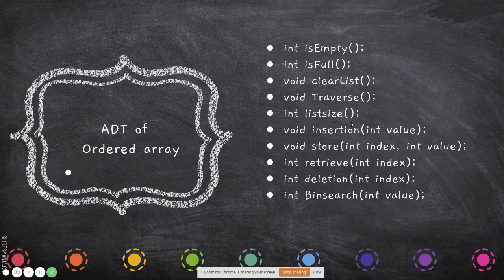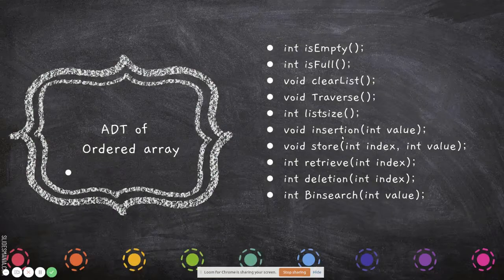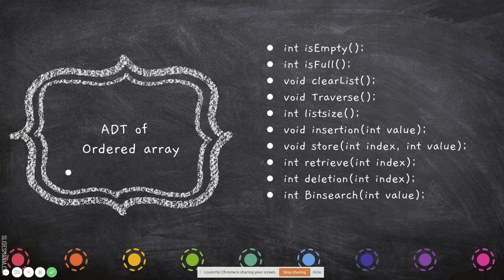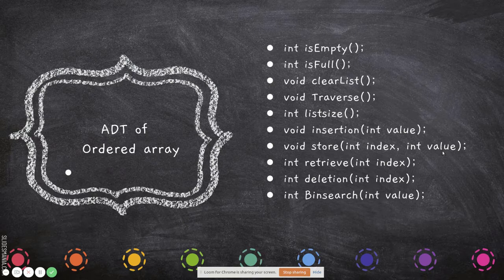'listSize' returns the number of elements currently in the array. 'insert' is used to insert a particular value. Notice that this insertion is different from what we saw in the unordered array — there you provided both an index and a value, but here you provide only the value, and the value automatically finds its correct position to be inserted in sorted order. 'store' replaces an existing element at a given index. 'retrieve' lets you see what is stored at a particular index.